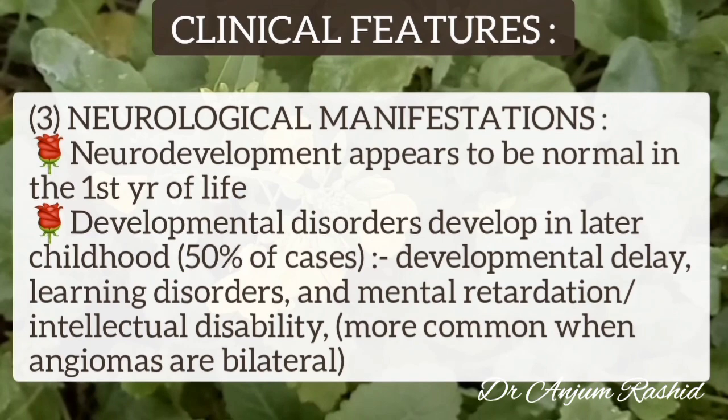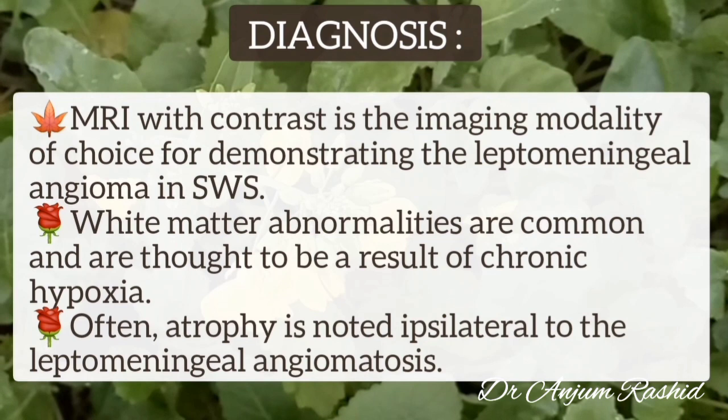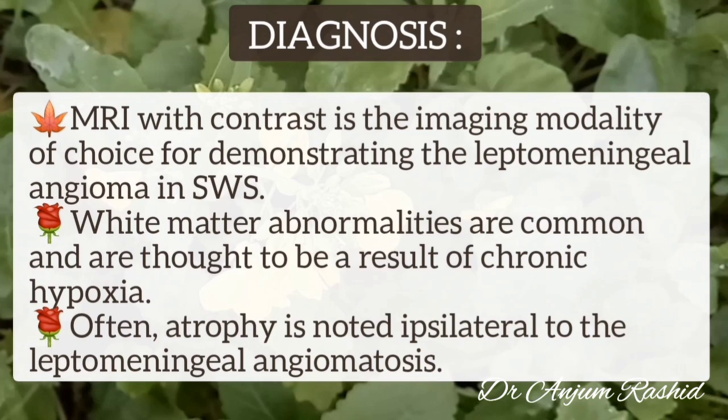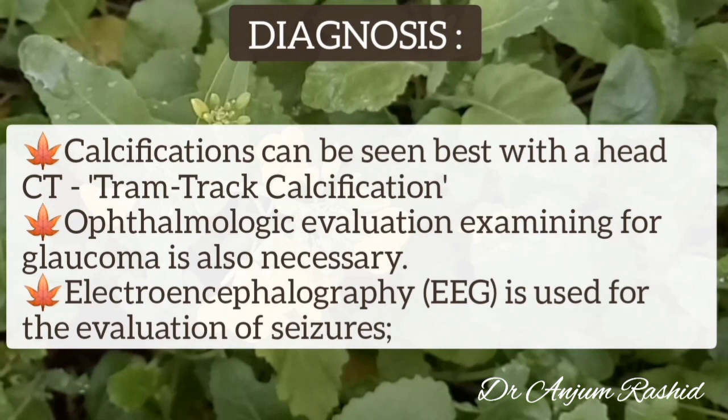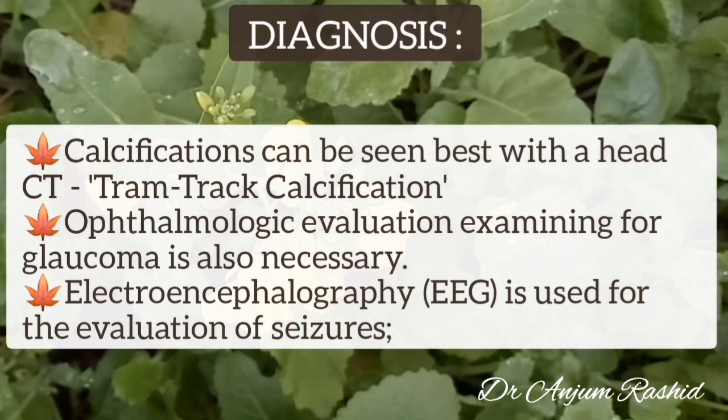Magnetic resonance imaging with contrast is the imaging modality of choice for demonstrating the leptomeningeal angiomas in Sturge-Weber syndrome. White matter abnormalities are common and are thought to be a result of chronic hypoxia. Often atrophy is noted ipsilateral to the leptomeningeal angiomatosis. Cerebral calcification can be seen best with head CT scan, and typically there is tram-track calcification. Ophthalmologic evaluation should be done for glaucoma, and electroencephalography is used for evaluation of seizures.